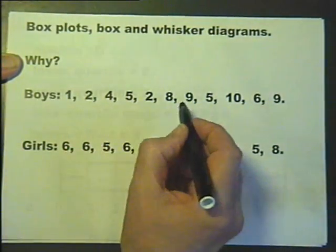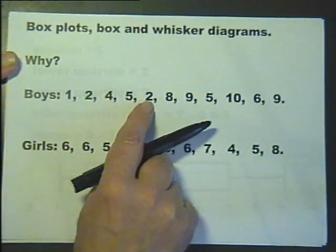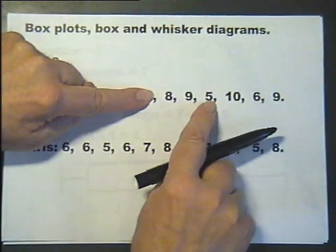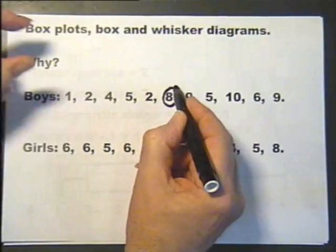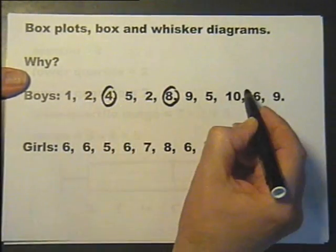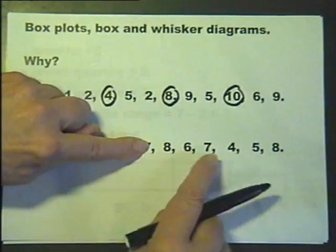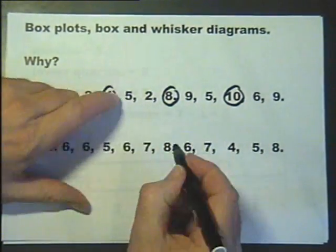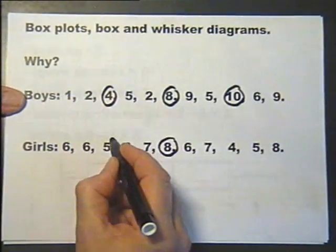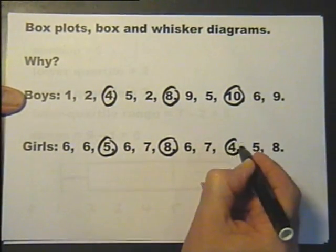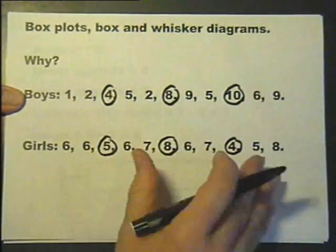And let's find the median. 1, 2, 3, 4, 5. 1, 2, 3, 4, 5. There's the median. There's the lower quartile. There's the upper quartile for the boys. Now the girls. 1, 2, 3, 4, 5. 1, 2, 3, 4, 5. And the range and the interquartile range is all there now.